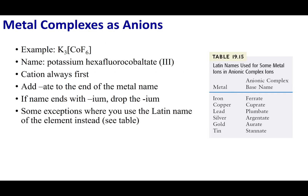If the complex ion is the anion, you still follow the ionic compound rule — name the cation first, then the anion. But when the complex ion is the anion, you change how the metal is named: add -ate to the end of the metal's name. If the metal name ends in -ium, drop the -ium and add -ate. For example, platinum becomes platinate. There are exceptions where some metal ions revert to their Latin names, but you'll be provided with that list when needed. Otherwise, the anion follows the same ligand-naming rules.